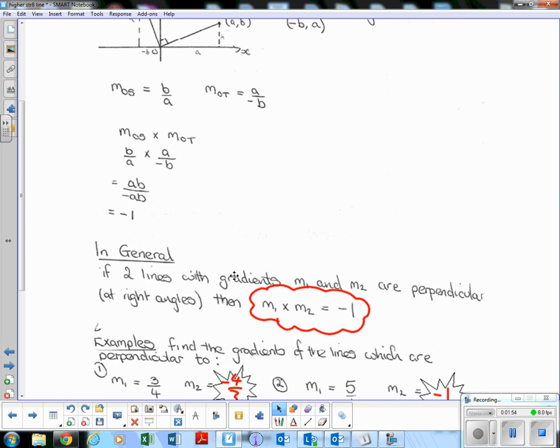So in general, if two lines of the gradients M1 and M2 are perpendicular at right angles to each other, then M1 times M2 equals negative 1.